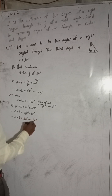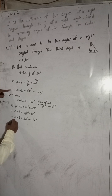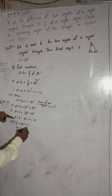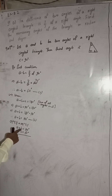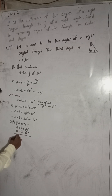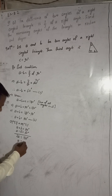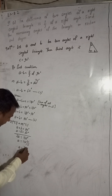We have equation two: A plus B equals 90 degrees, and equation one: A minus B equals 60 degrees. By adding both equations, plus B and minus B cancel out. So 2A equals 150 degrees, therefore A is equal to 75 degrees.